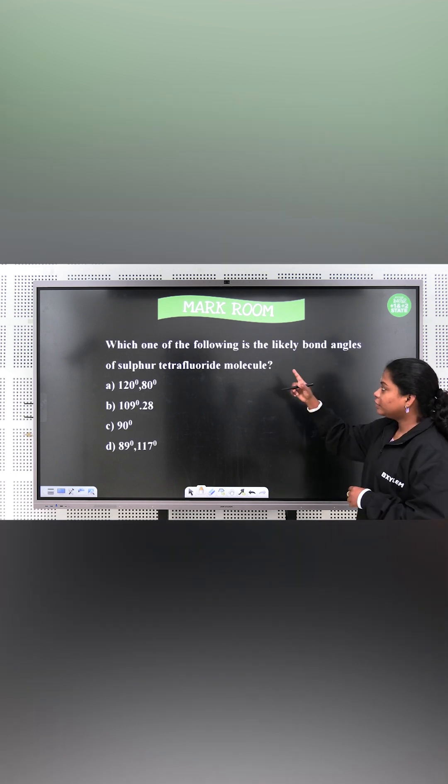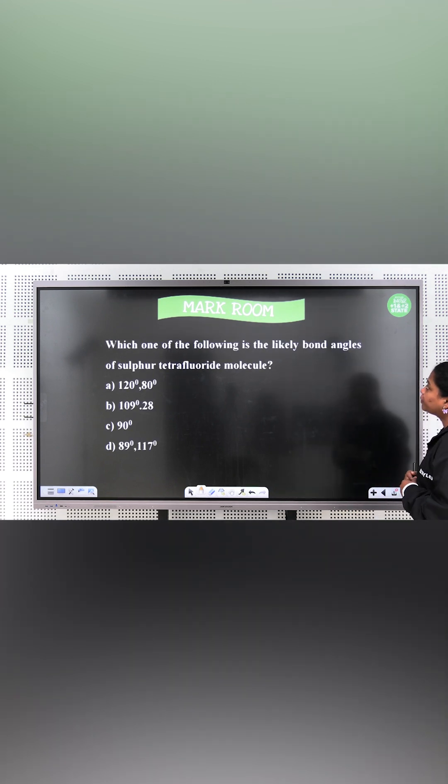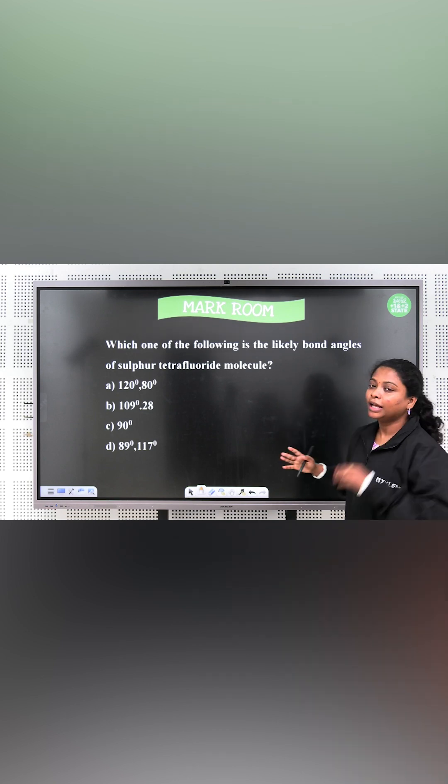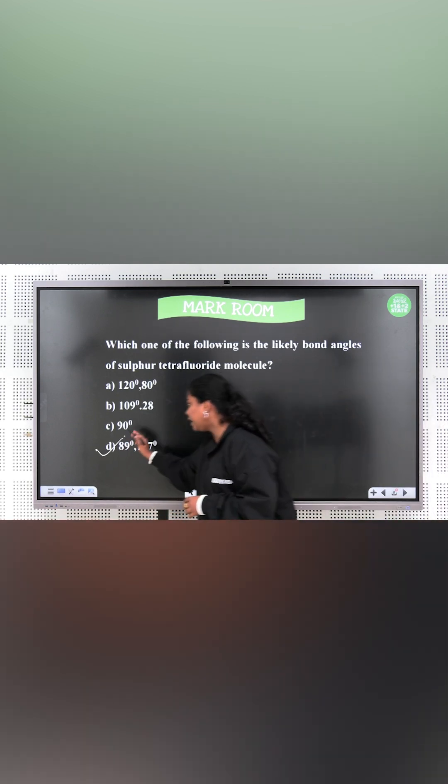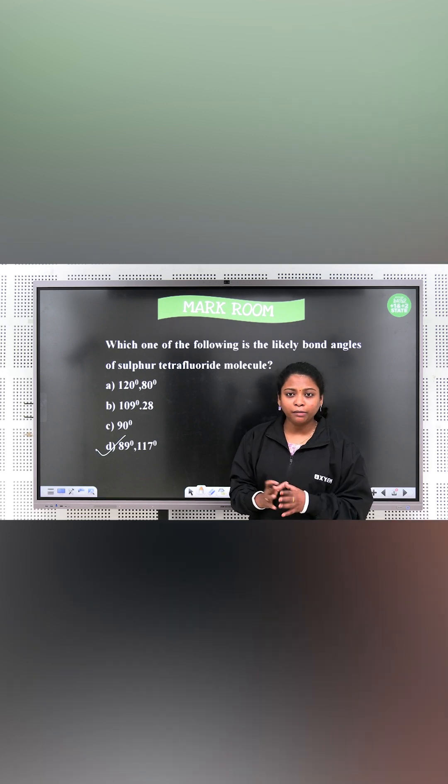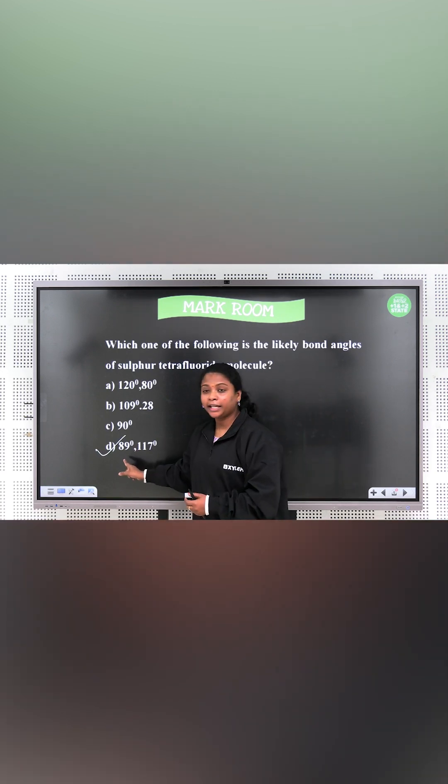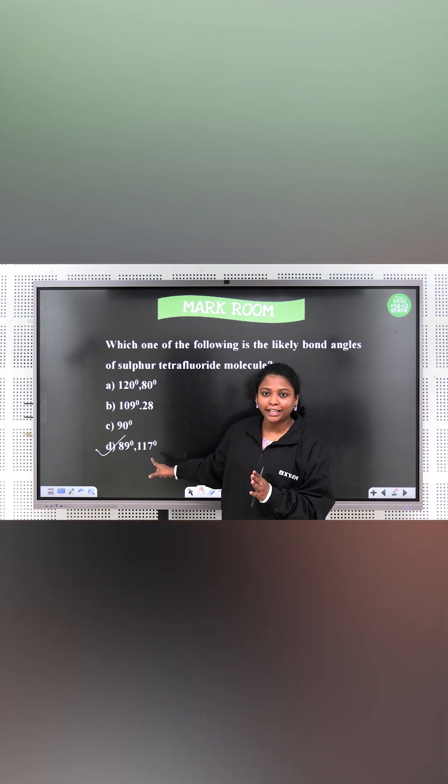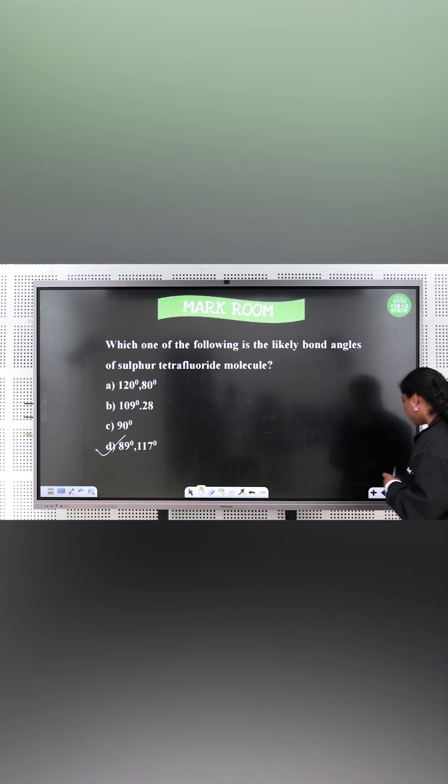Which one of the following is the likely bond angles of sulfur tetrafluoride molecule? The right answer is 89 degrees and 117 degrees. Because SF4, the right answer is lone pair. Due to the lone pair repulsion, 90 degrees becomes 89 degrees, and 120 degrees becomes 117 degrees.